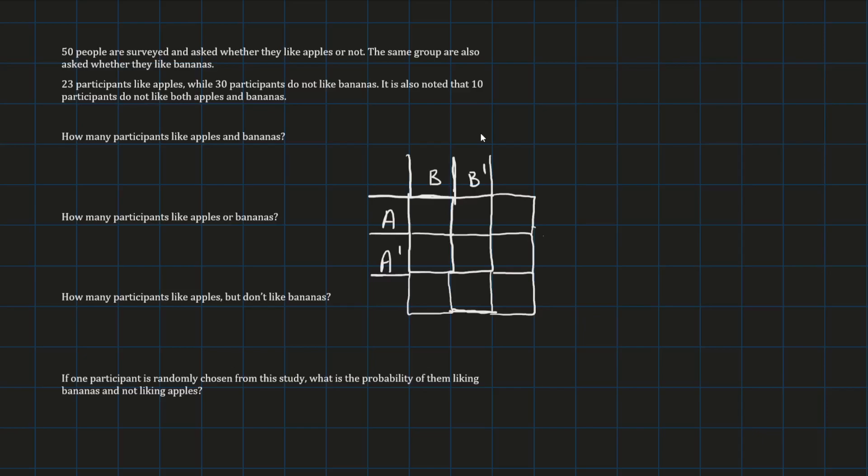So we see we've got a bit of information here. And the questions are asking us individual things about different combinations. For example, the first question asks us how many people like apples and bananas? How many people like apples or bananas? How many people like apples, but don't like bananas? And you get the picture.